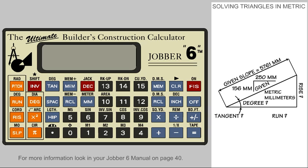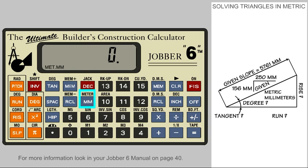With the calculator turned on, we need to activate the metric mode by pressing the millimeter key. Note the small metric icon that appears in the lower left side of the display.